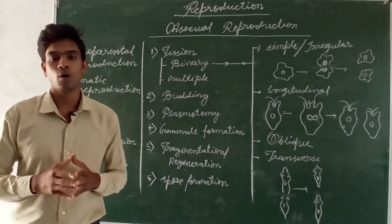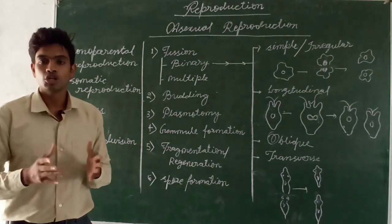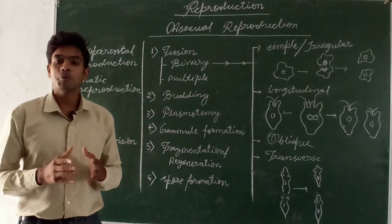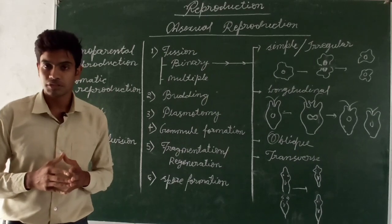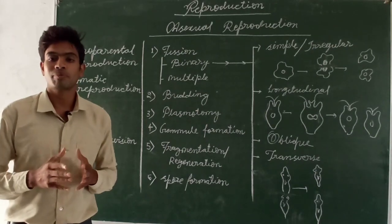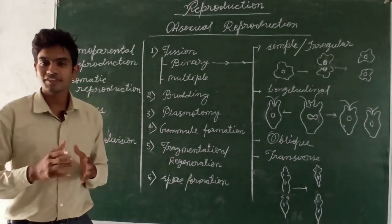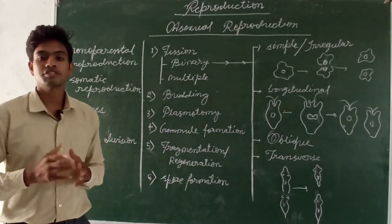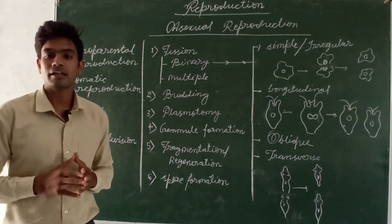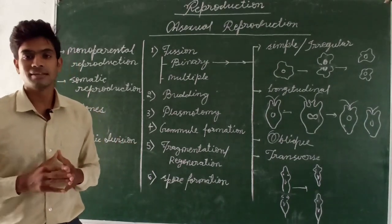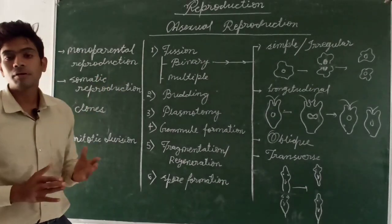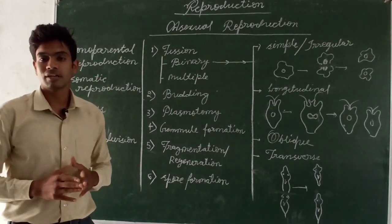In this video we will talk explicitly about asexual reproduction. When an offspring is produced by a single parent without gamete formation, it is called asexual reproduction. The first key point is that a single parent is capable of producing offsprings, hence this is called monoparental reproduction — only one parent participates.